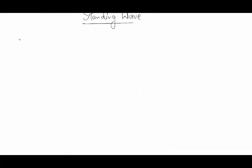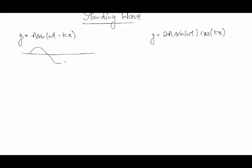Now we have two things: one is a normal wave equation which is a sin(omega t minus kx), and the other is the standing wave equation y equals 2a sin(omega t) cos(kx). Although these two waves might appear exactly the same visually, there is a distinct feature about the standing wave equation. Look at this term — cos(kx) — it is an independent term depending only on x.